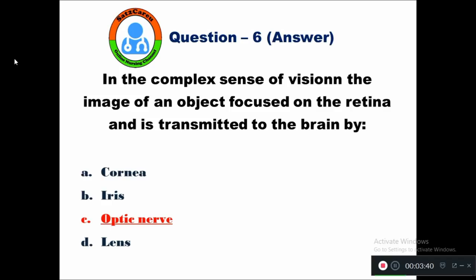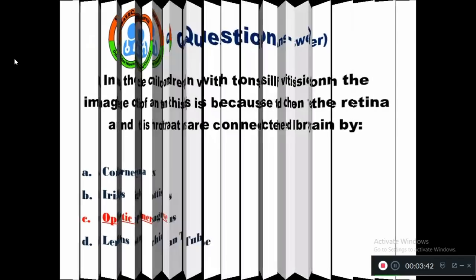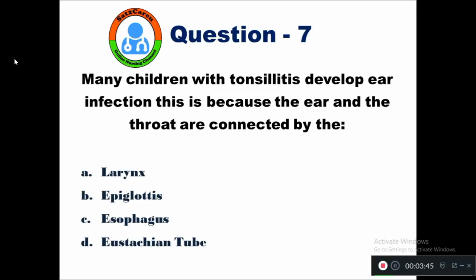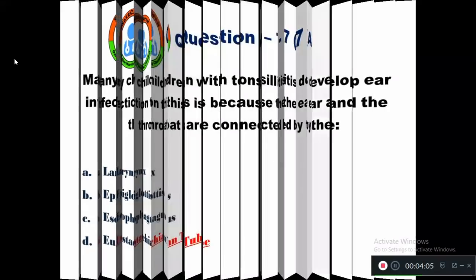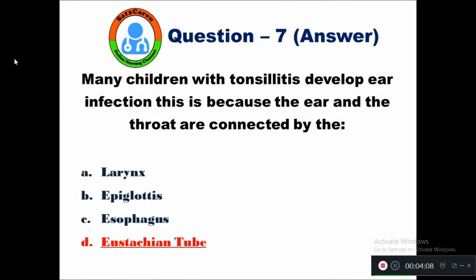Question 7: Many children with tonsillitis develop ear infection. This is because the ear and the throat are connected by — option A larynx, B epiglottis, C esophagus, D Eustachian tube. The right answer is the Eustachian tube, which connects the ear and the throat. That's why children with tonsillitis develop ear infection very easily.